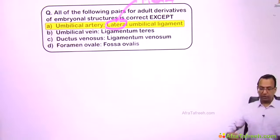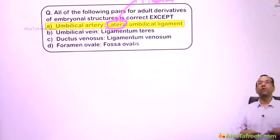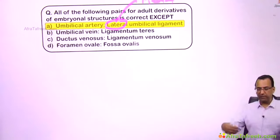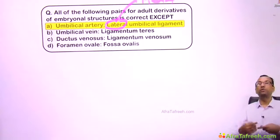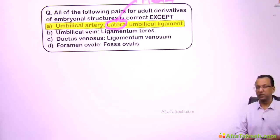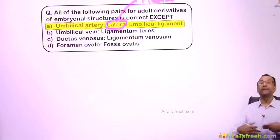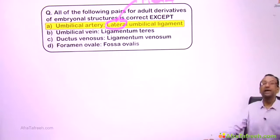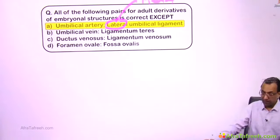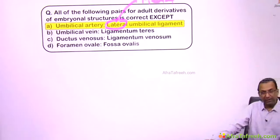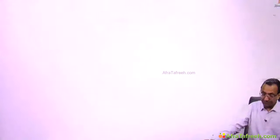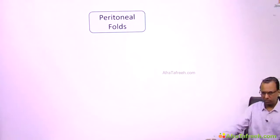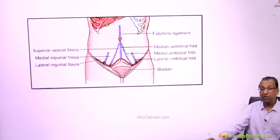On the anterior abdominal wall, there are structures passing towards the umbilicus covered by peritoneal folds, and these folds have specific names. The answer to the question is confirmed: it is the medial umbilical ligament, not lateral.